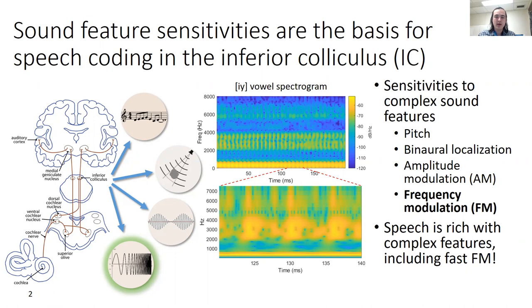The IC is also sensitive to amplitude modulation, or AM, and frequency modulation, or FM. This is particularly interesting for speech coding. As you can see, if you zoom in on the spectrogram for the E vowel, speech is rich with these complex features, including fast FM.